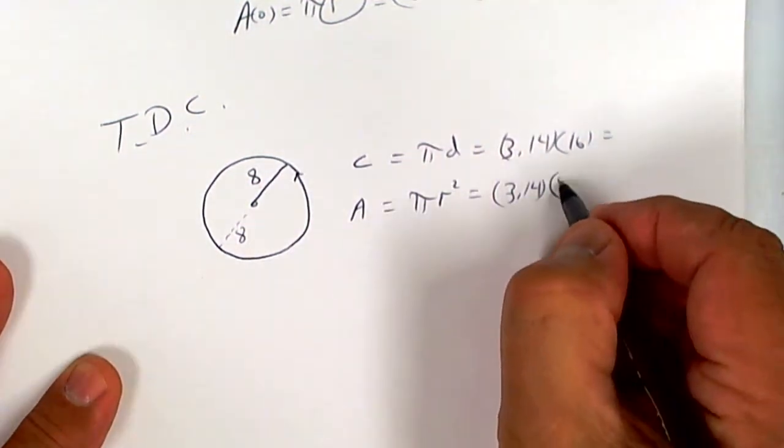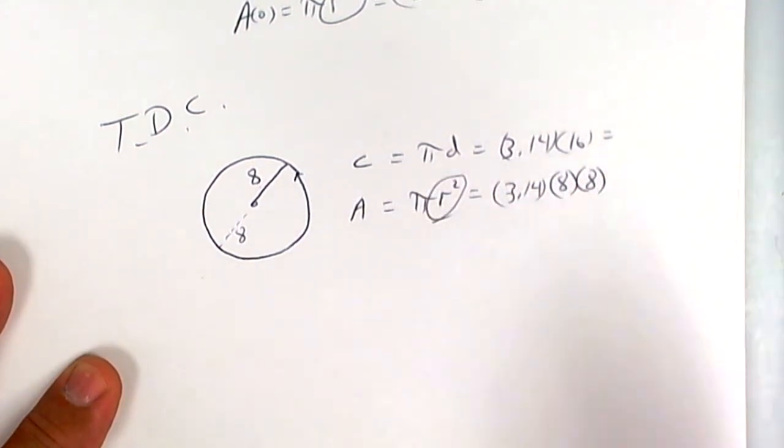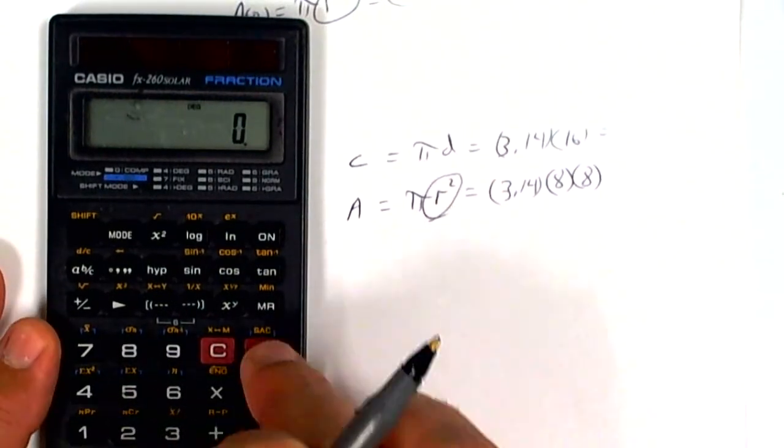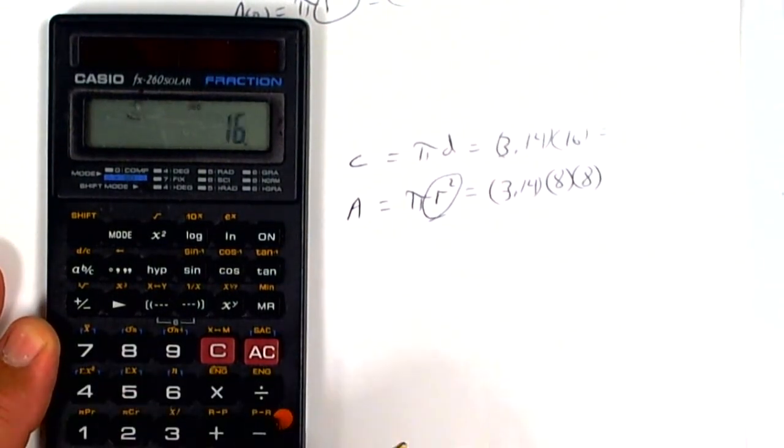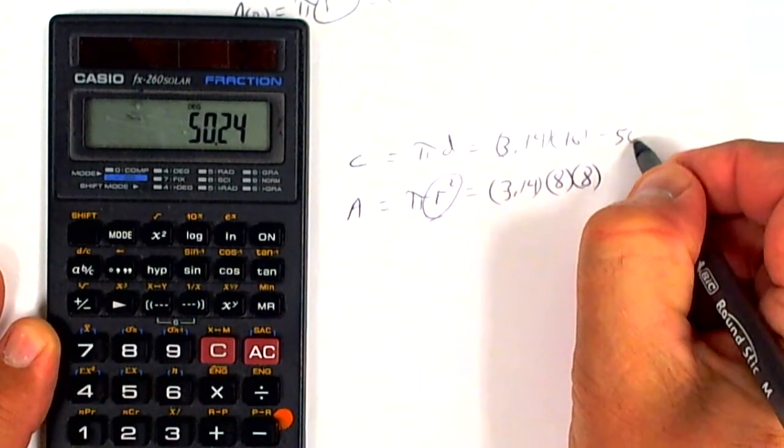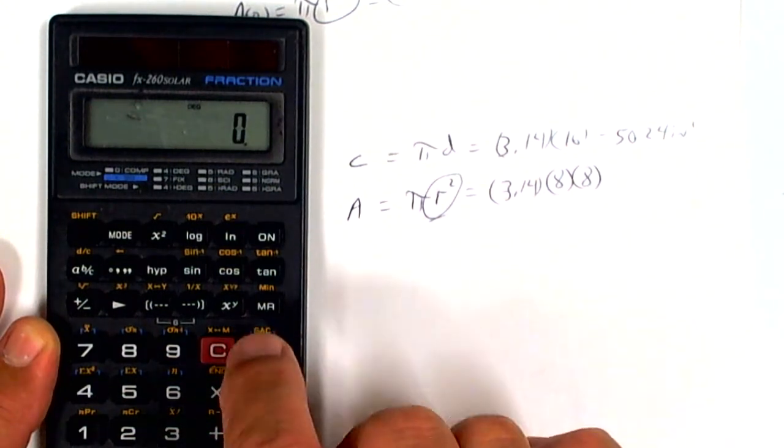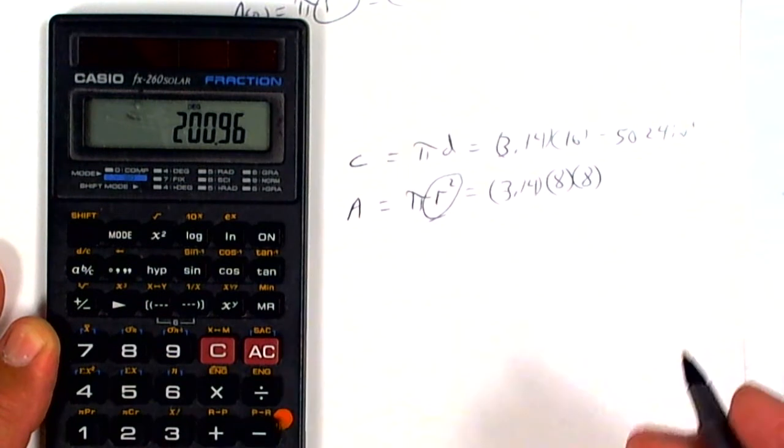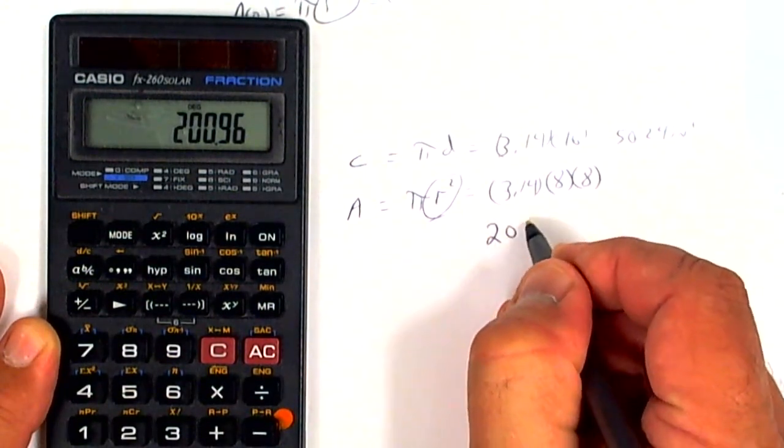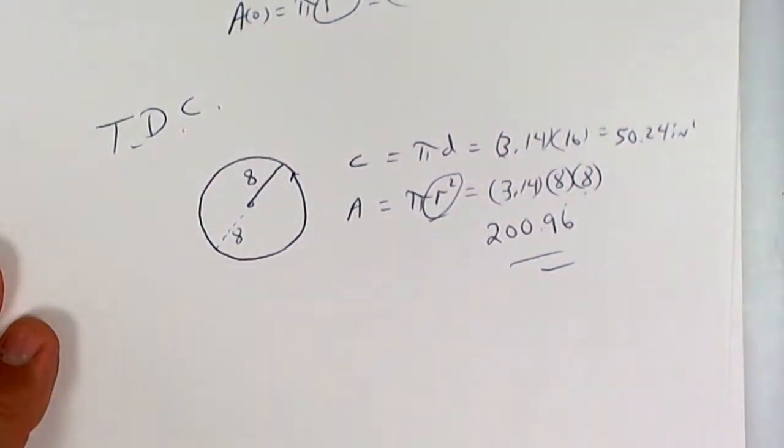Let's get the calculator. Press 3.14 times 16—we get 50.24 inches. Let's do this one: 8 times 8 is 64, times 3.14, press equals. There is a pi key on your calculator if you want to look for it. It's more accurate if you use that one.